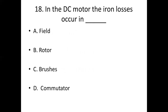Eighteenth one. In the DC motor, the iron losses occur in dash. Option A: field. Option B: rotor. Option C: brushes. Option D: commutator. Answer: Option B, rotor.